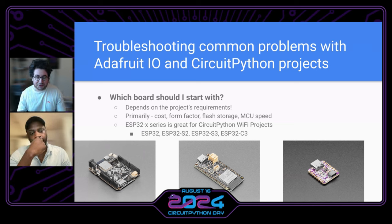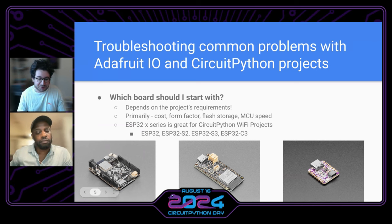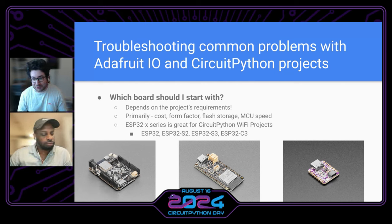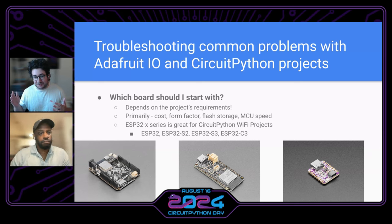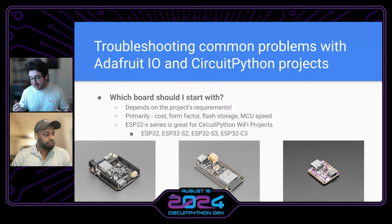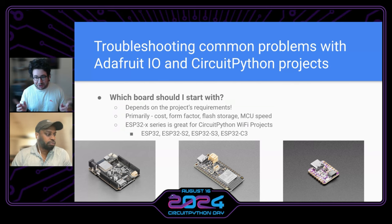Generally, Adafruit sells three form factors: a Metro, which is Arduino-like, then the Feather, which is smaller, and then the QtPy, which is the smallest. I recommend picking up an ESP32 or newer for using Adafruit IO with CircuitPython. One thing to remember is that you connect securely over SSL, so that requires the chip memory to be larger, and you need to be able to store certificates.